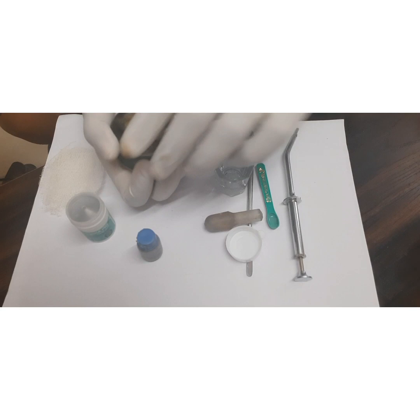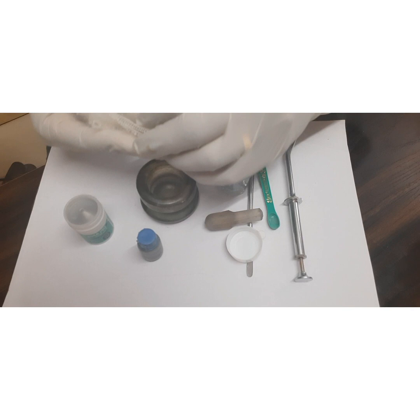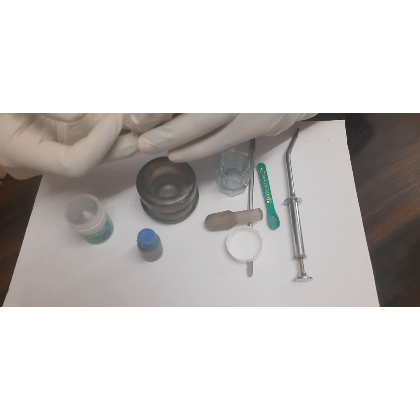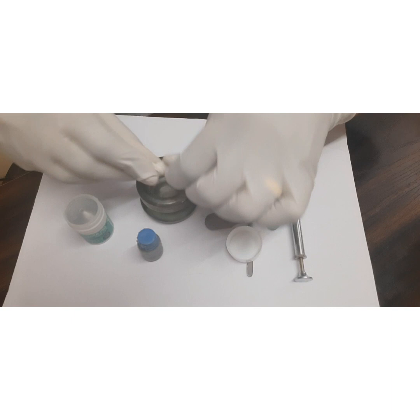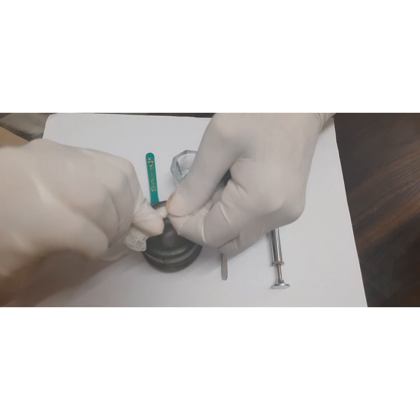Once you have done the mix, this is the mix which you see here. You take a gauze piece, place it on that, and now you have to press it in like this. When you are squeezing, excess mercury will be flowing out. You have to remove that excess mercury like this.